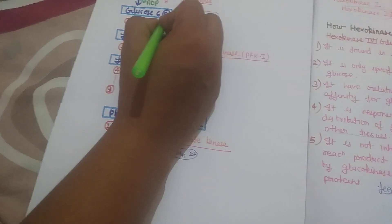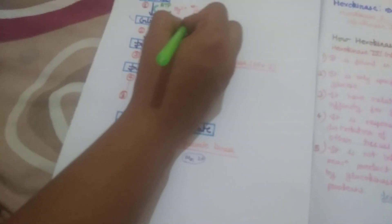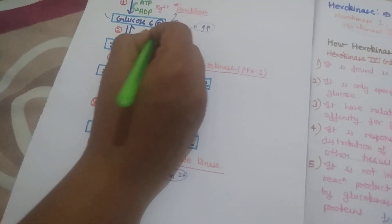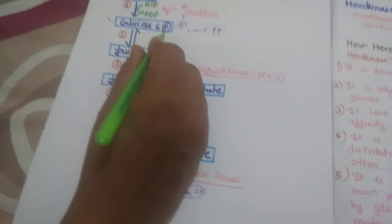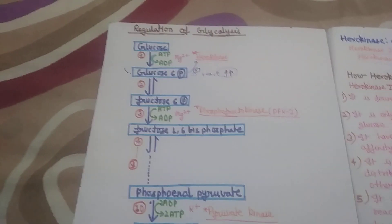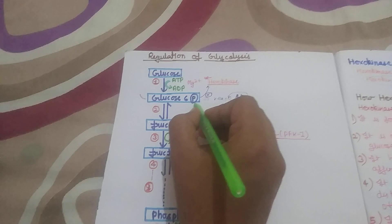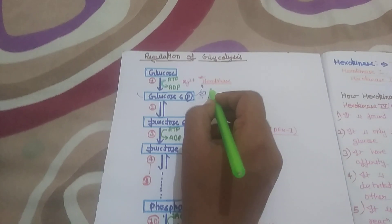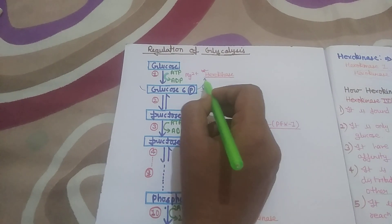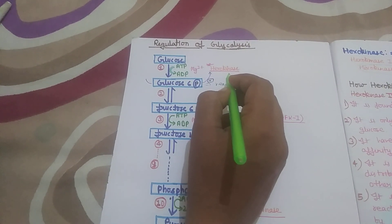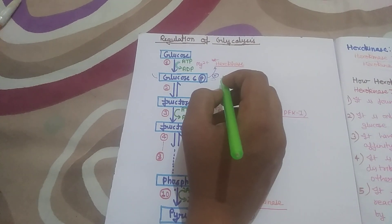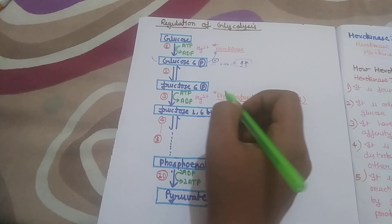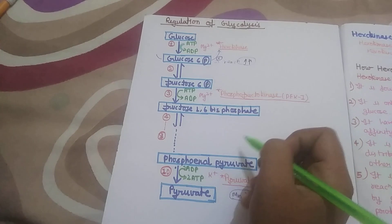So Hexokinase is inhibited by Glucose-6-phosphate, which is its reaction product — this is called feedback inhibition. Glucokinase does not undergo feedback inhibition, whereas Hexokinase does undergo feedback inhibition. This is all about the first regulatory step of glycolysis. In the next video lecture, I will explain the second and third regulatory steps of glycolysis. Thank you.